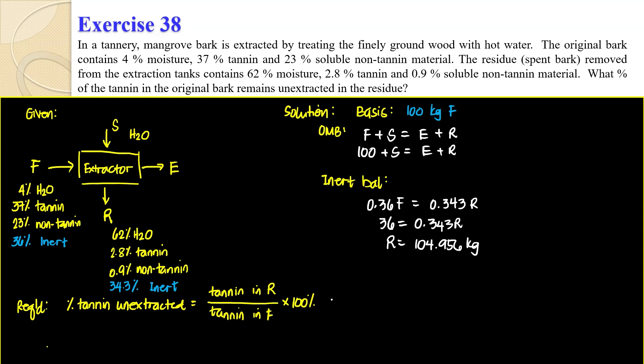But this is not the one being asked. What's being asked is tannin in R, so I can say the tannin in R is actually 0.028 times the residue, 104.956, divided by the tannin in F, so that's 0.37 times 100, and then you multiply this by 100. So the answer would be 0.07943 or approximately 7.94% is the amount unextracted.